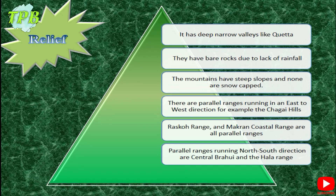The relief of the Balochistan Plateau features deep narrow valleys, like the famous Quetta valley. The land has bare rock due to lack of rainfall, so soils are really dry and patchy. The mountains have steep slopes and none are snow-capped because most are below 3000 meters above sea level. There are parallel ranges running east to west such as the Jhob Hills, Raskoh Range, and Makran Coastal Range, and other north to south ranges like the Central Brahui and Hala Range.